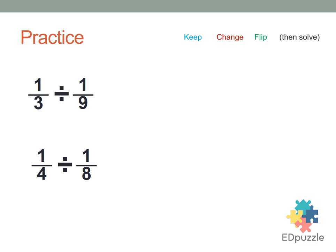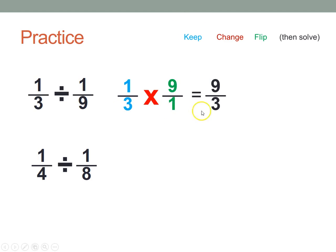All right, let's see how you did. You should have kept the 1/3, changed division to multiplication, and flip 1/9 to 9/1. We then multiply, 1 times 9, we get 9, we multiply the denominators, 3 times 1 is 3, and when we simplify, we get 3.